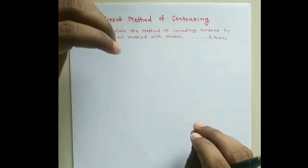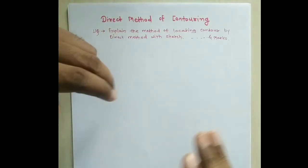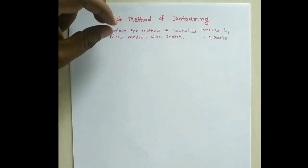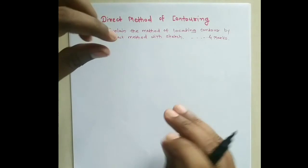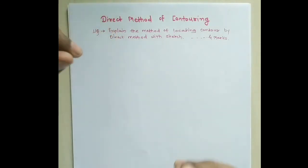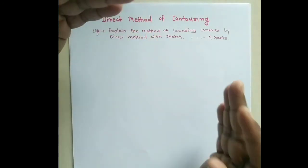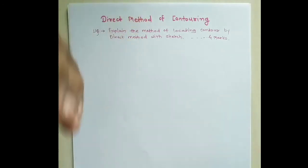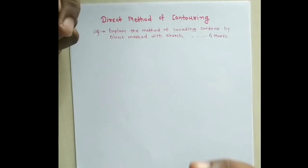That is why the direct method is very slow, very time-consuming, and very tedious. However, it is useful for small areas where greater accuracy is required. It is a tedious process because the staff must be placed at every location to directly trace each contour point, but the results obtained are very accurate.